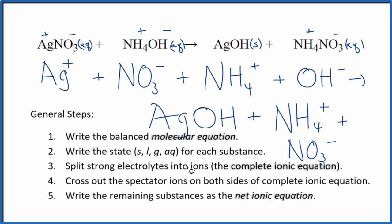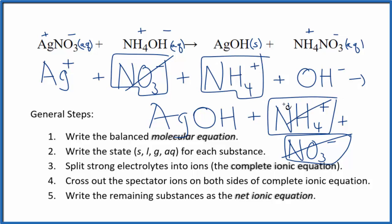At this point we'll cross our spectator ions out. They're on both sides. So I have my reactants here and then down here these are our products. In the reactants I can see there is a nitrate ion and in the products, so I'm going to cross that out. I have an ammonium ion here and again in the products. Let's cross those out. What's left is the net ionic equation.